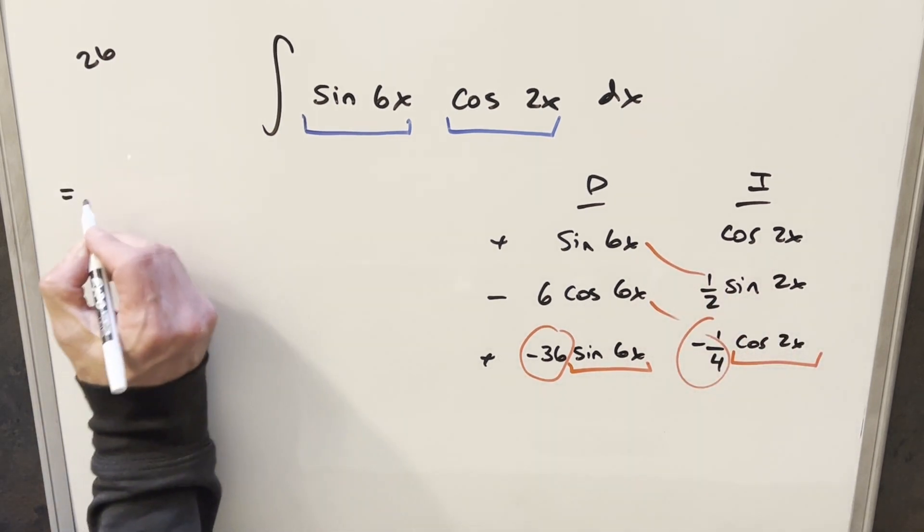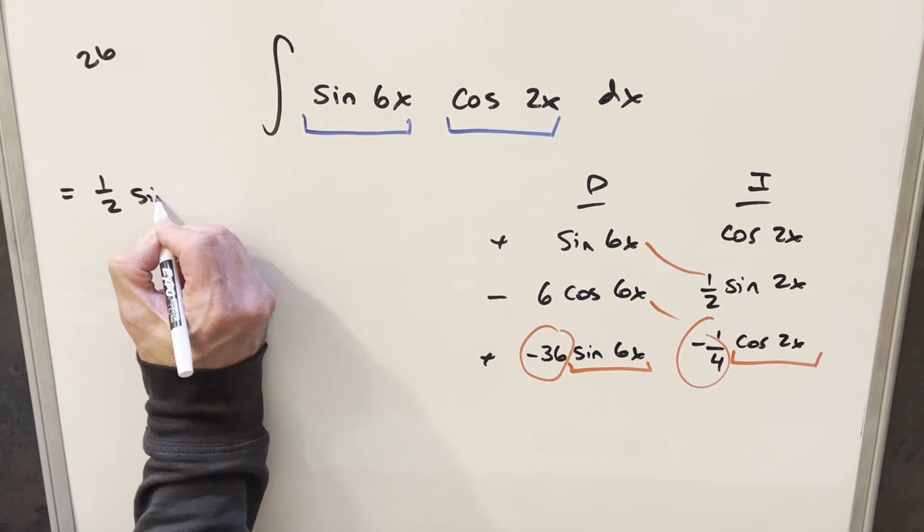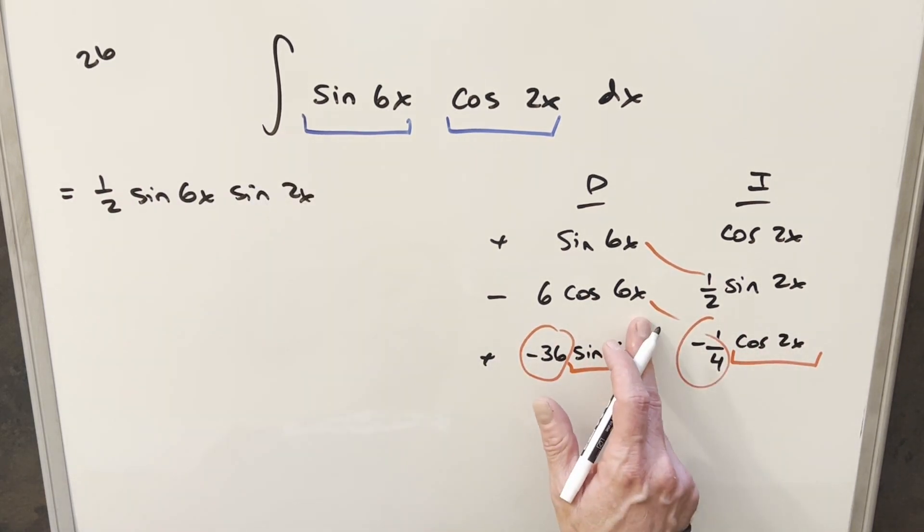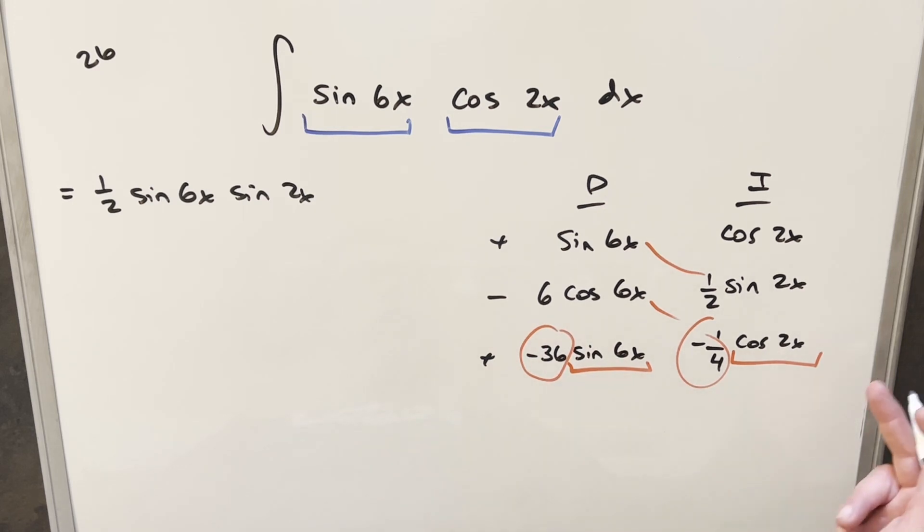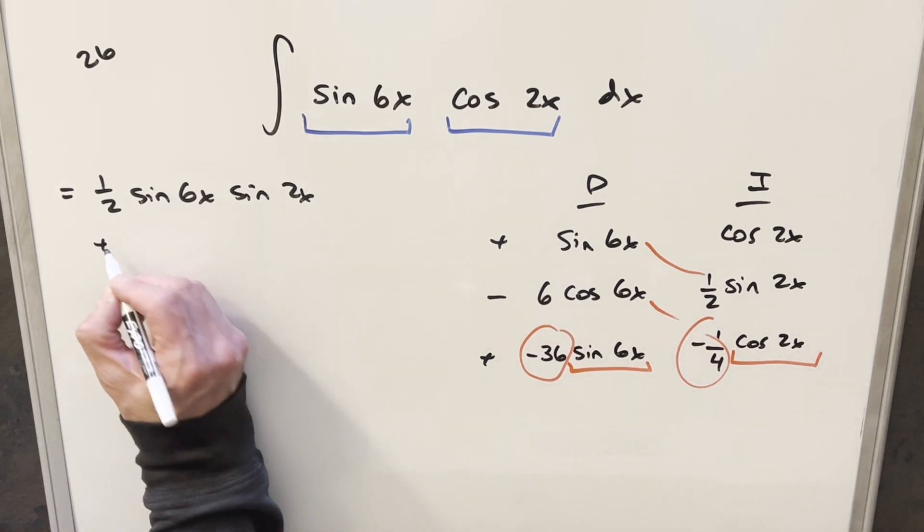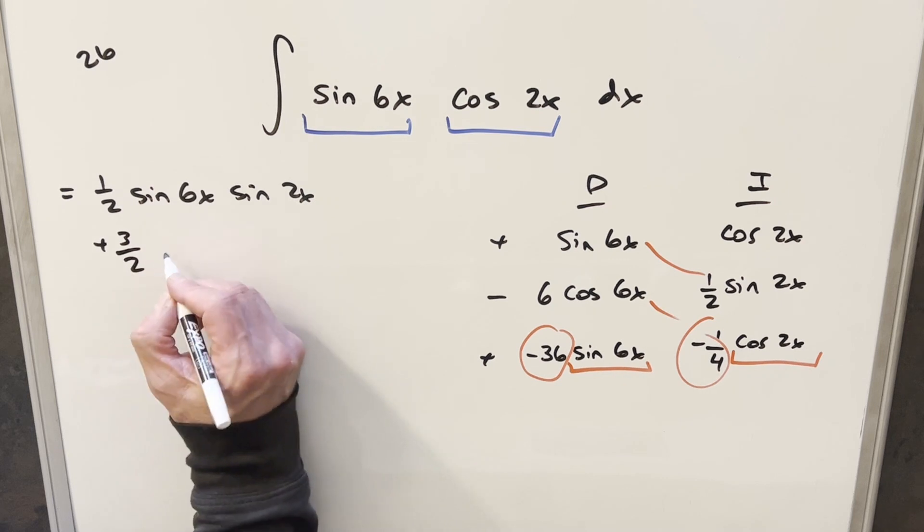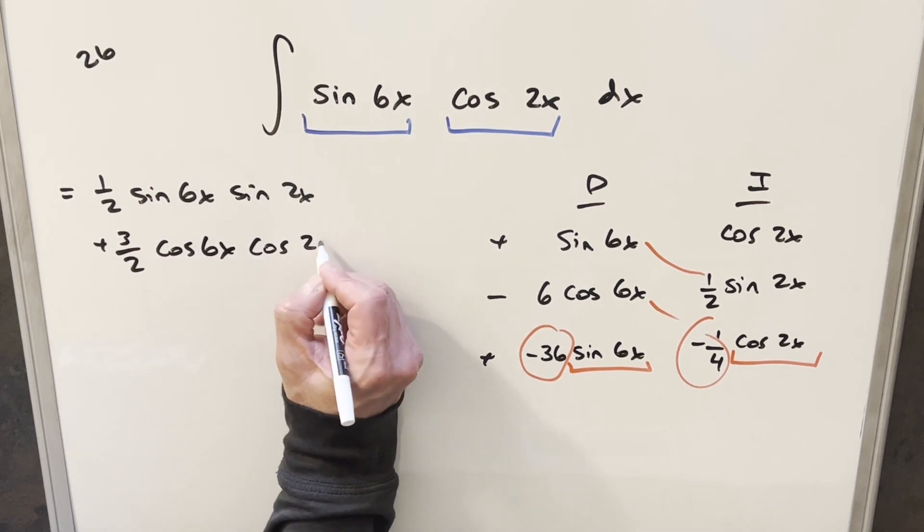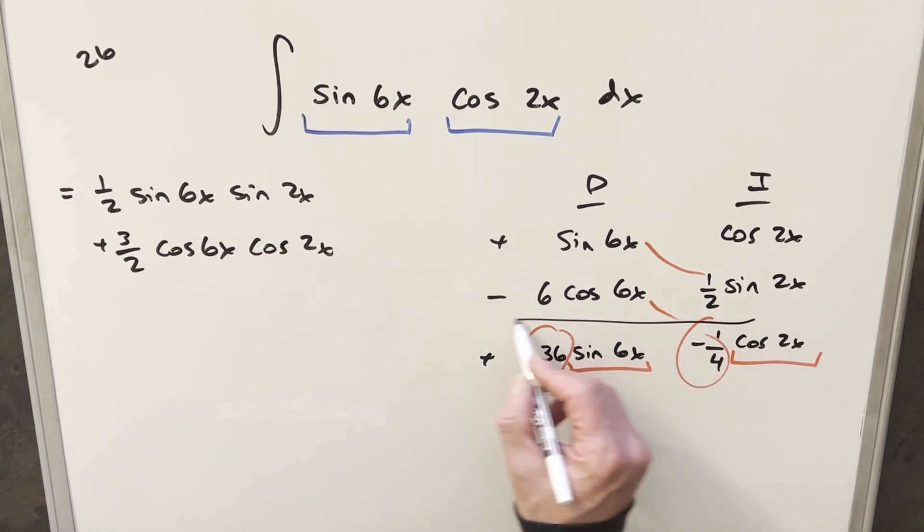So for this first part, we're going to have 1 half sine 6x times sine 2x. And then for this next part, minus 6 times minus 1 fourth gives me positive 6 over 4, which I can reduce to positive 3 halves, cosine 6x, cosine 2x. And then this last row, this is going to be an integral here.